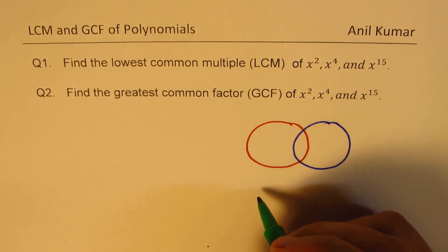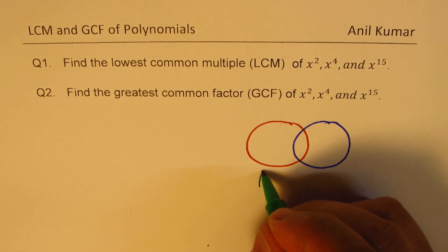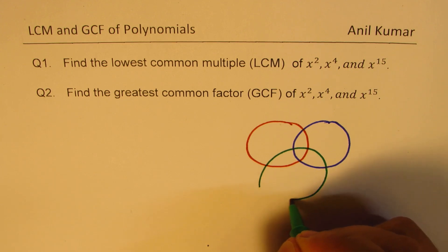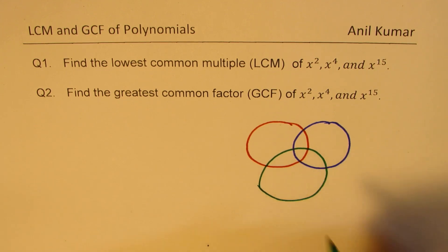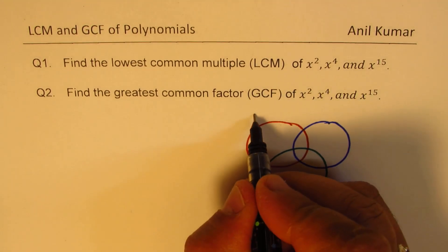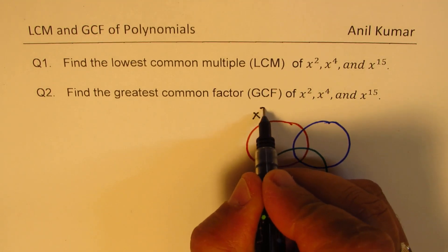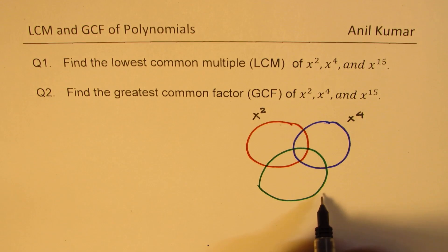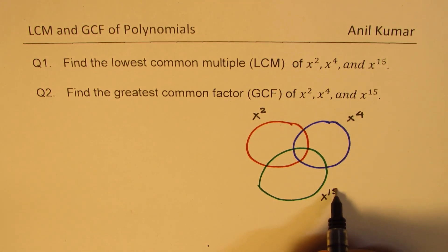These three circles represent the three polynomials: x squared, x to the power of 4, and x to the power of 15.